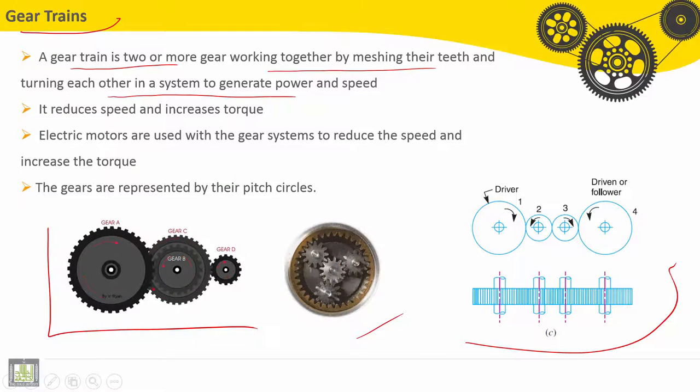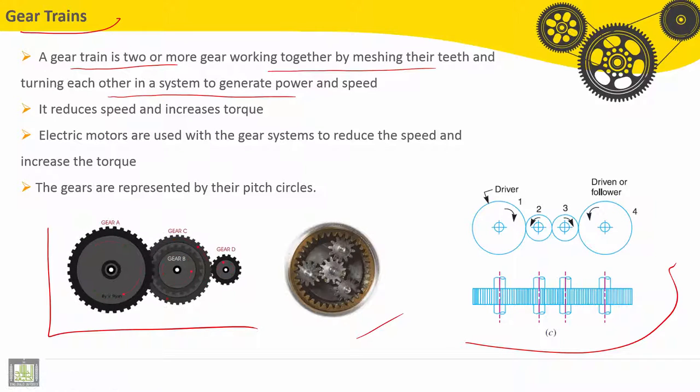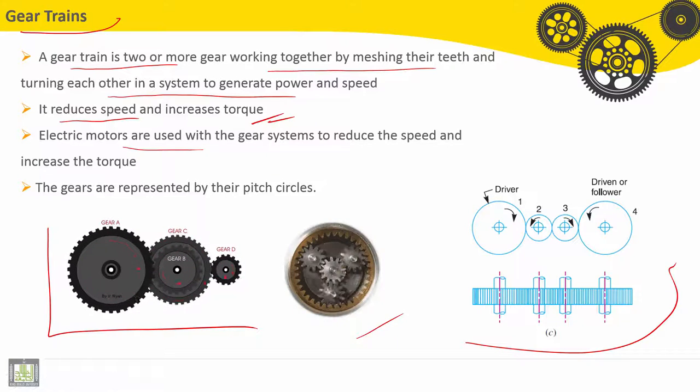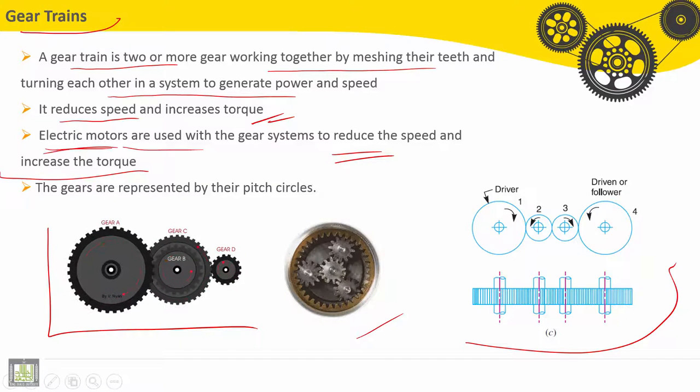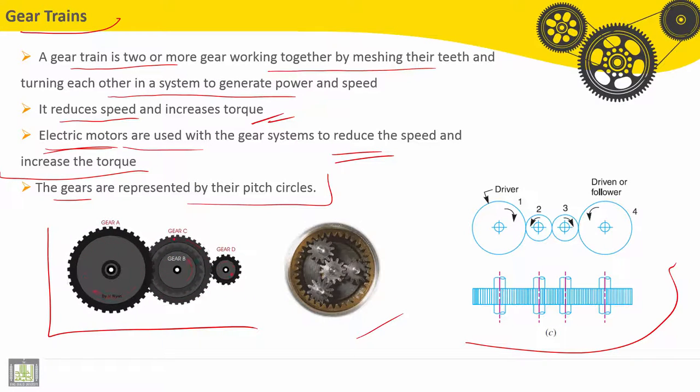It reduces speed and increases torque. Electric motors are used with the gear systems to reduce the speed and increase torque, because usually electrical motors have a high speed.